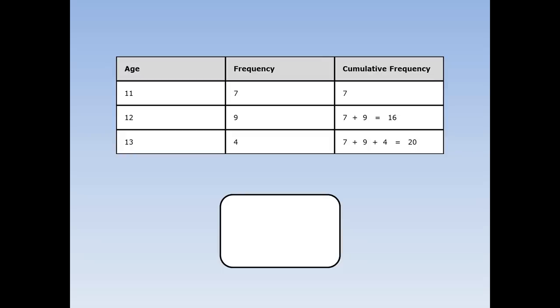Next, we need to work out the midpoint. 20 plus 1 is 21. 21 divided by 2 is 10.5. We want the first cumulative frequency that's above 10.5, and that's this one: 16. That tells us that the median is 12.